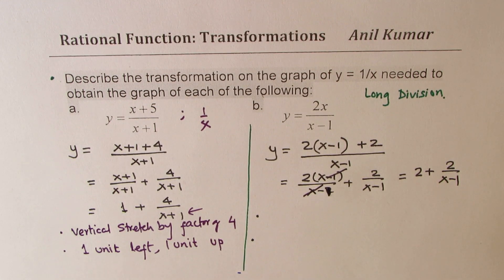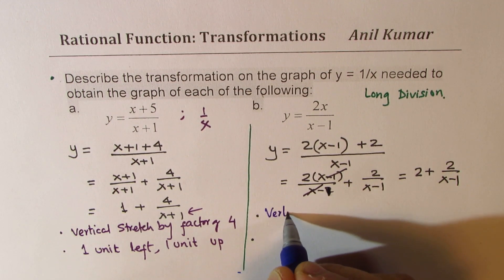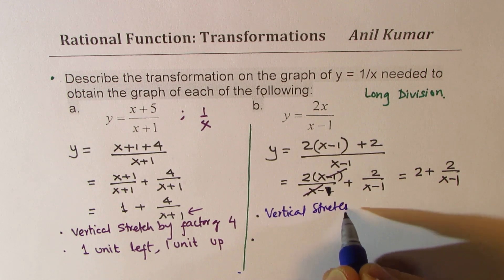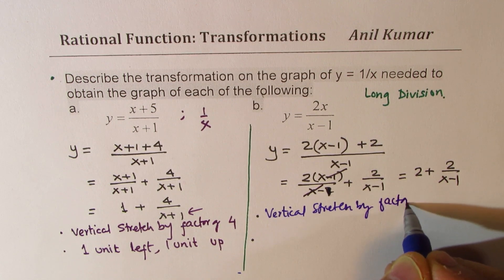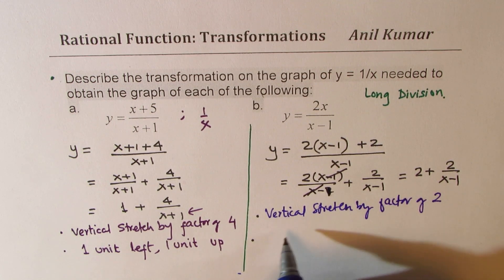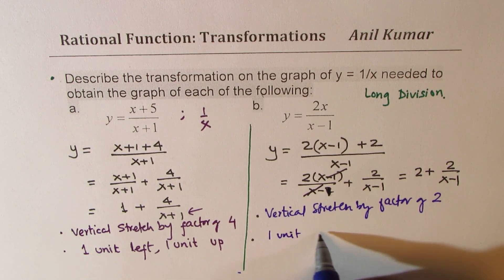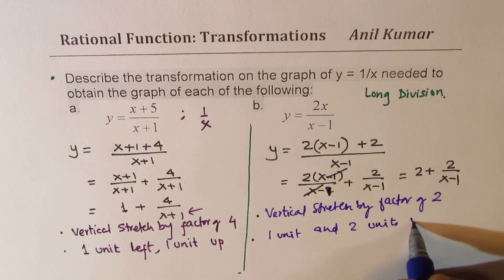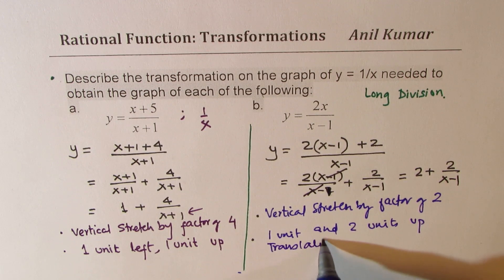Perfect. Isn't that simple? So this time we have vertical stretch by factor of 2. And translation, 1 unit right and 2 units up. So that is the translation. Does it make sense to you?